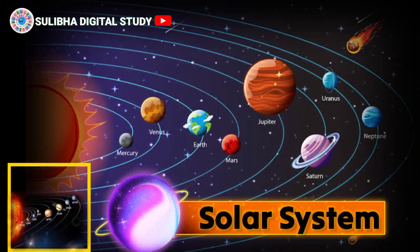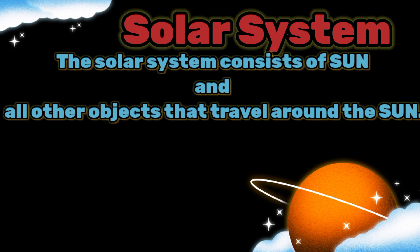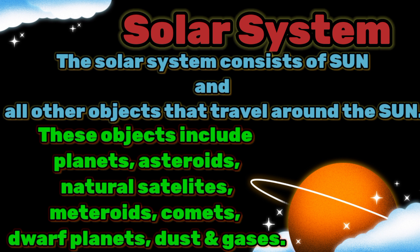Hello kids, today we will learn about the solar system. The solar system consists of the sun and all other objects that travel around the sun in space. These objects include planets, asteroids, natural satellites, meteorites, comets, dwarf planets, dust and gases.